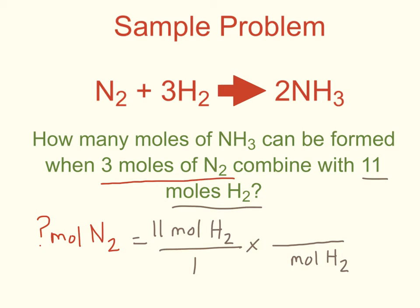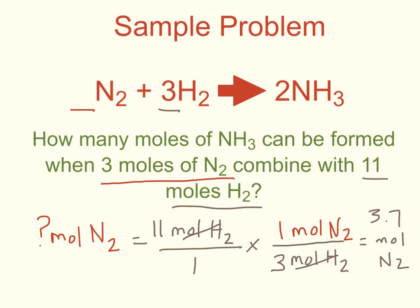Here is where I use my mole ratio. I'm going to convert from the moles of what I'm given to the moles of what I'm looking for, or nitrogen gas. Looking at the balanced equation, there's a coefficient of one in front of nitrogen, so I have one mole of nitrogen gas, and a coefficient of three in front of hydrogen, so I have three moles of hydrogen gas. Moles of hydrogen gas cancels, and I take 11 divided by 3 to get 3.7 moles of nitrogen gas — this is how much I need. Looking back at the problem, I need 3.7 but I only have 3 moles, meaning I do not have enough nitrogen gas. So my limiting reactant is nitrogen gas.